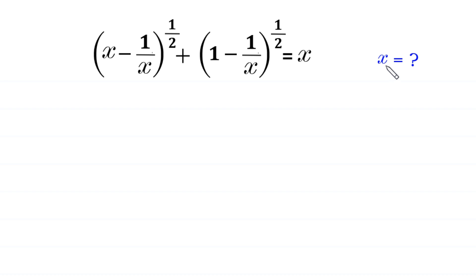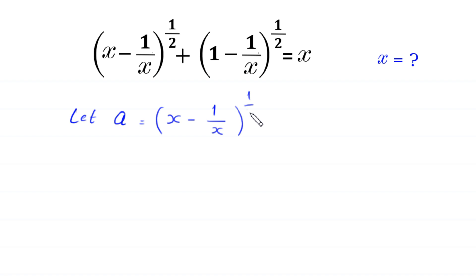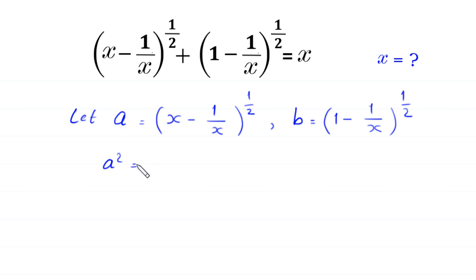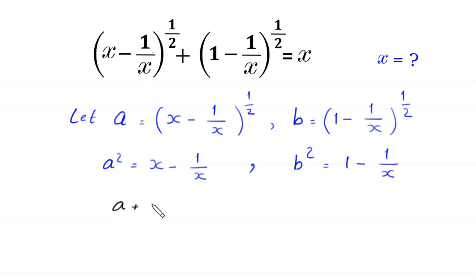We need to find all possible values of x. Let a equal (x minus 1 over x) to the power 1 over 2, and b equal (1 minus 1 over x) to the power 1 over 2. Squaring both sides gives a squared equals x minus 1 over x, and b squared equals 1 minus 1 over x. Substituting a and b, the equation becomes a plus b equals x — we call this equation 1.